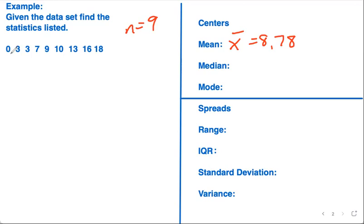The mode is the most repeated number. Three repeats the most, so the mode's going to be three.